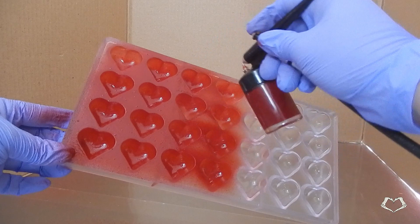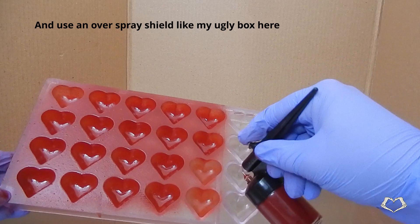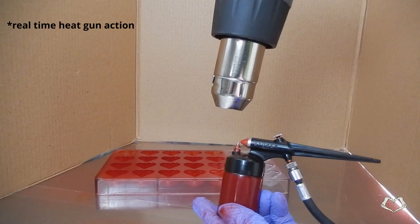Sometimes the tip where the cocoa butter comes out can clog. This can be fixed with either a clean pin or with a heat gun on low for just a few seconds. You can use a hairdryer in a pinch, but it will take longer.